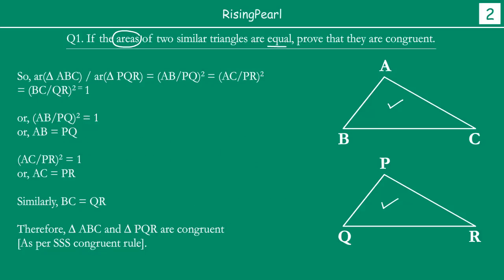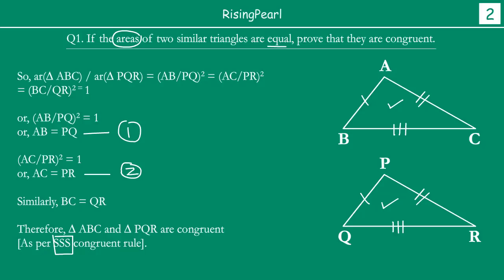So if AB/PQ whole square equals 1, we get AB equals PQ. If AC/PR whole square equals 1, we get AC equals PR. Similarly, we get BC equal to QR. So if you look at these two triangles, AB equals PQ, AC equals PR, and BC equals QR. Therefore we say these two triangles are congruent as per SSS — side-side-side congruence rule.